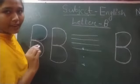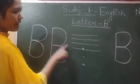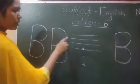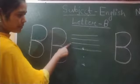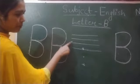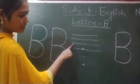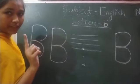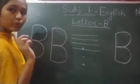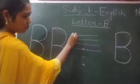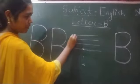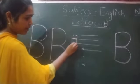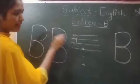Now we write letter B in our lines. We use only three lines. Look how. First make a standing line. Curve, and curve. This is the letter B.